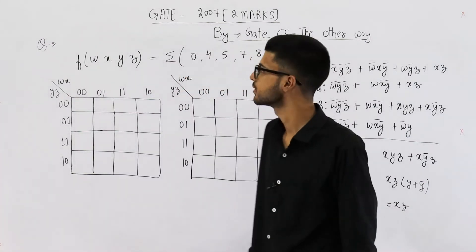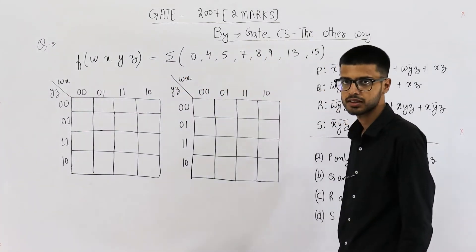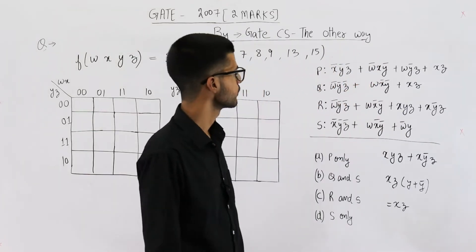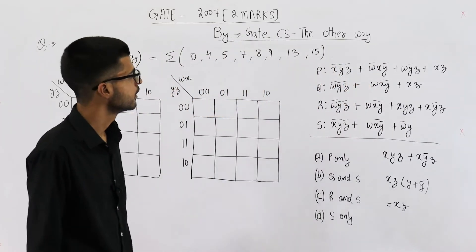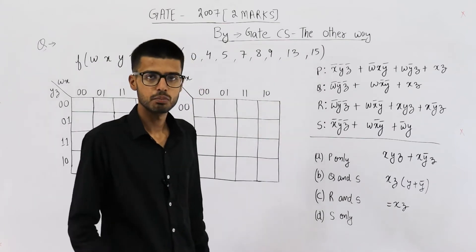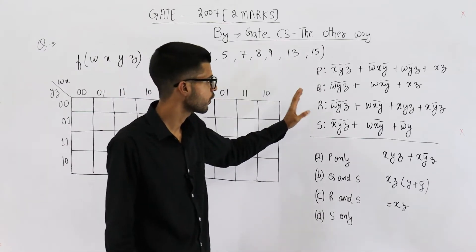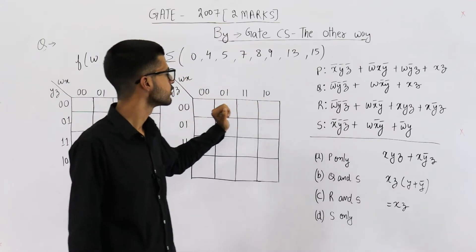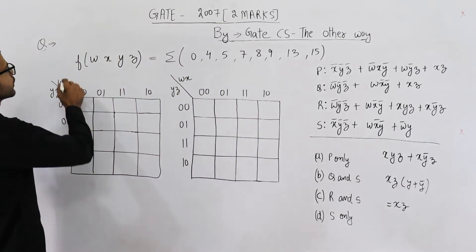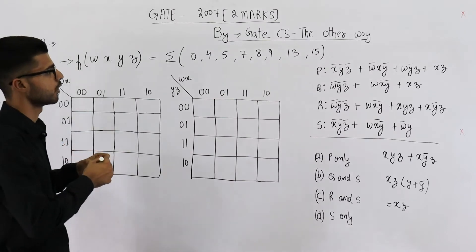Hello people, welcome back. This is a question from GATE 2007, and this one is also for two marks. Let us just see what they're asking. They have given you these four statements — they are Boolean expressions — and they're asking which of the following is not equivalent to this given function f. They have specified all the minterms of f.